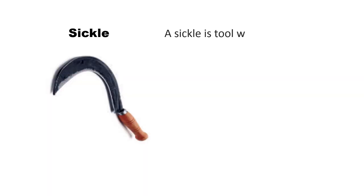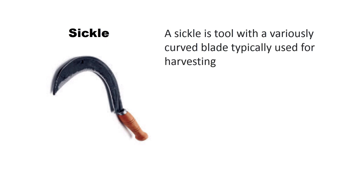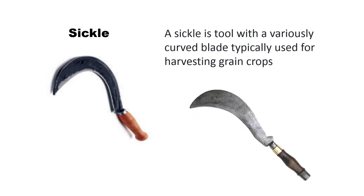A sickle is a tool with a variously curved blade, typically used for harvesting grain crops. Another form of sickle also exists. This type of sickle has a sharp curved blade and is used for cutting stems or wood.